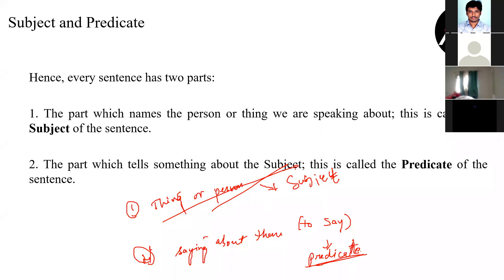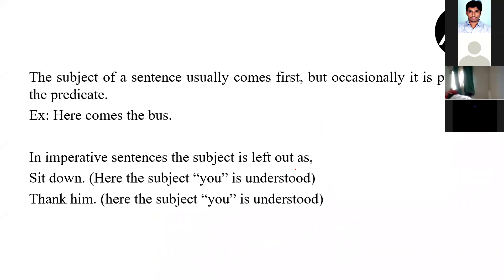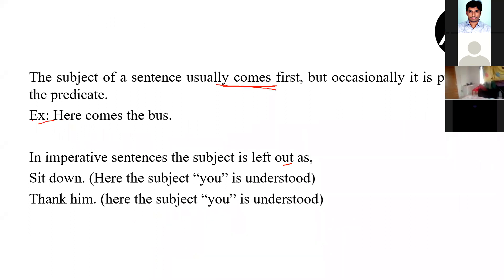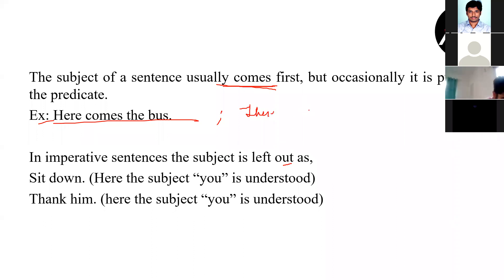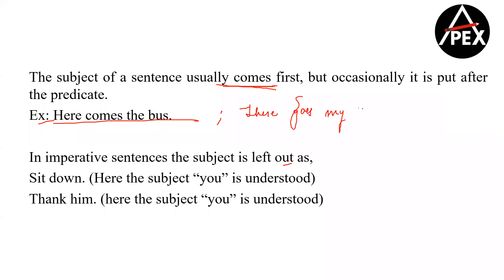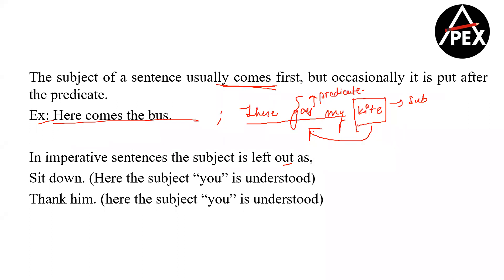Usually the subject of the sentence will come first. But sometimes — in very rare cases — we will have to put the predicate before. For example, if I say 'here comes the bus' or 'there goes my kite' — I'm talking about kite and telling it's gone somewhere. So kite is my subject and 'there goes' is my predicate. There are very rare cases where I put the predicate before the subject; otherwise 99.99% of times, subject comes first, then predicate.